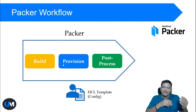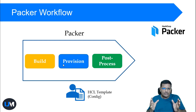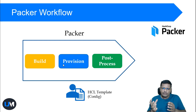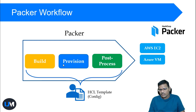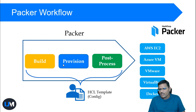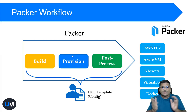After provisioning is complete, Packer takes an image of the virtual machine. On AWS cloud it takes the AMI of the EC2 instance; on Azure it takes the image of the virtual machine. Once everything is done, it provides you with the image information — on AWS it gives the AMI ID, on Azure it gives an image ID. You can also build Docker images using Packer.